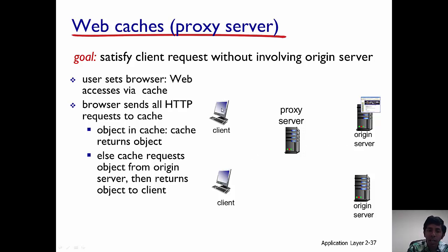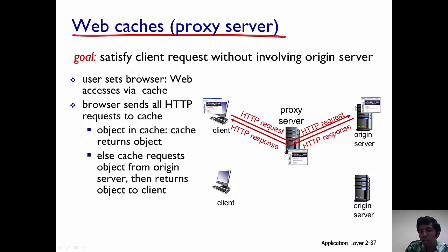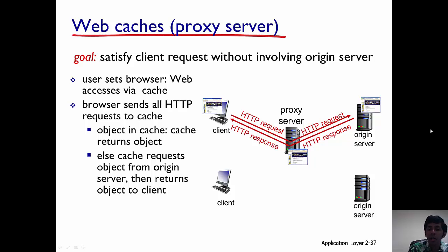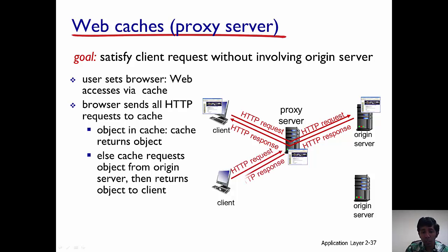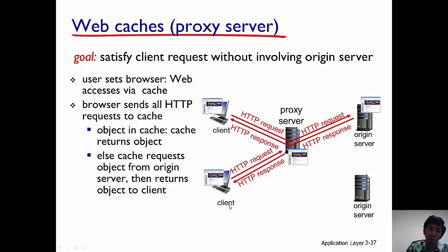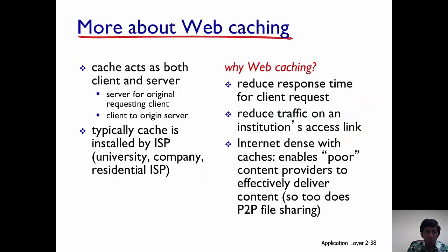Let's see how caching works. The client sends an HTTP request message to the proxy cache. The proxy cache forwards this request to the origin server, which sends back an HTTP response message to the proxy, which then forwards it to the client. The proxy server caches that information. The next time a client sends an HTTP request for the same content, the proxy does not forward it to the origin server — it just sends the cached HTTP response directly, giving the client a much faster response.